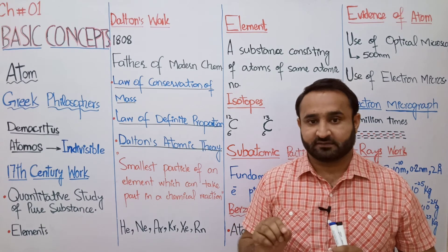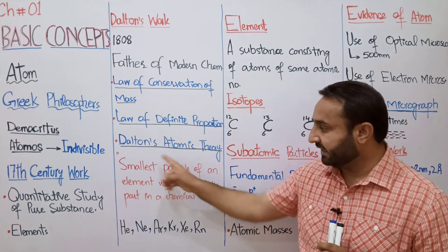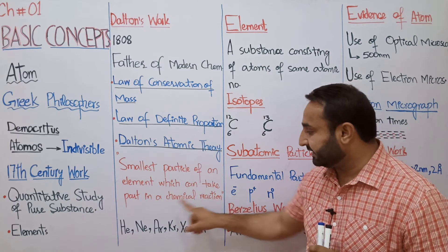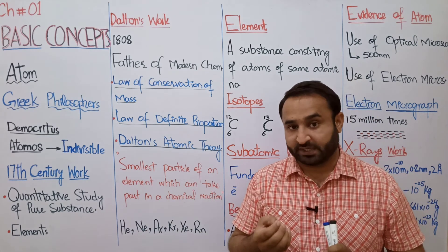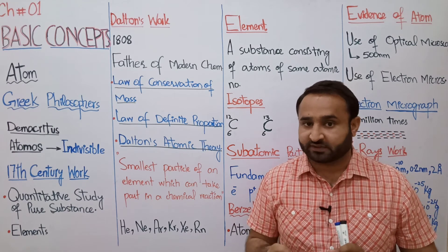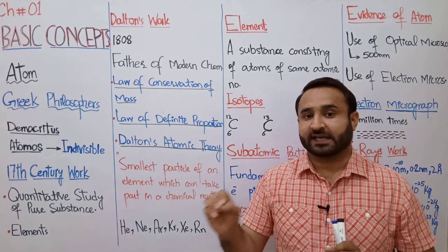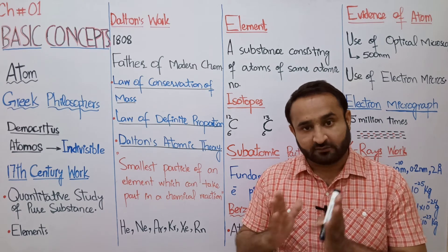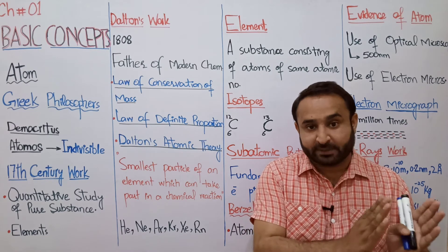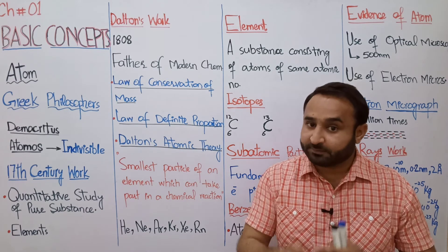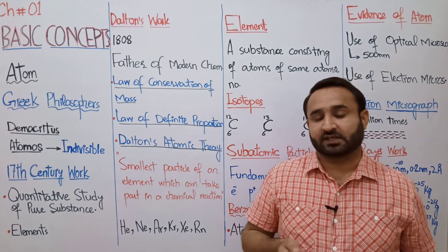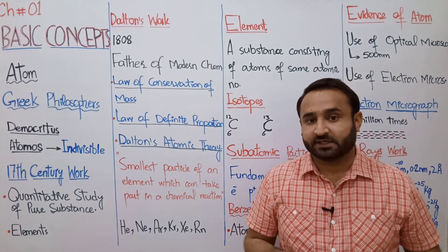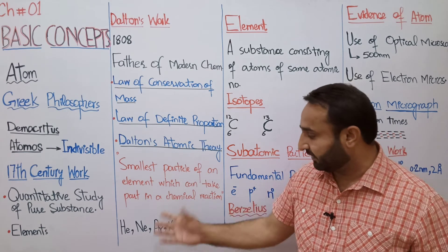Greek definition کہ atom indivisible ہے، وہ rule out ہو چکی ہے۔ Atom کی new definition یہ ہے: atom is the smallest particle of an element which can take part in a chemical reaction. یہ بڑی important definition ہے — atom وہ چھوٹے سے چھوٹا ذرہ ہے جو independently chemical reaction میں حصہ لے سکتا ہے۔ Atom سے چھوٹے particles جیسے electron، proton، neutron اکیلے independently chemical reaction میں حصہ نہیں لے سکتے۔